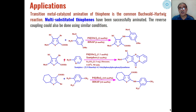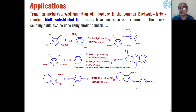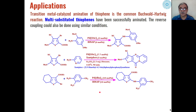Similarly, the same substituted thiophenes when reacted with 2-aminopyridine, a new carbon-nitrogen bond is formed. Because of the presence of delocalization on the pyridine ring, the product undergoes cyclization to give a tetracyclic product through Buchwald-Hartwig reaction.